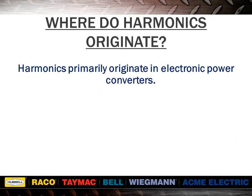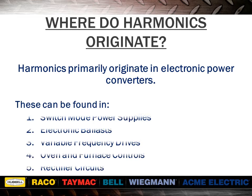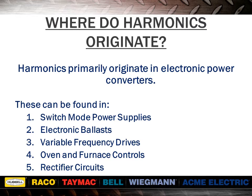Harmonics primarily originate in electronic power converters. These can be found in switch mode power supplies, electronic ballasts, variable frequency drives, oven and furnace controls, and rectifier circuits. Harmonics originate any time current is being drawn in short, rapid pulses rather than in a smooth, continuous manner.